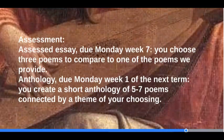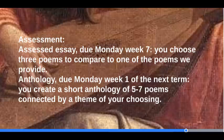The assessments also let you explore the poetry of the period. The assessed essay is due on Monday of week 7, and for this exercise you choose three poems to compare to one of the poems that we set. Your second exercise is an anthology, and that's due on Monday of week 1 of the next term. For this exercise you create a short anthology — five to seven poems that are connected by a theme that you choose.